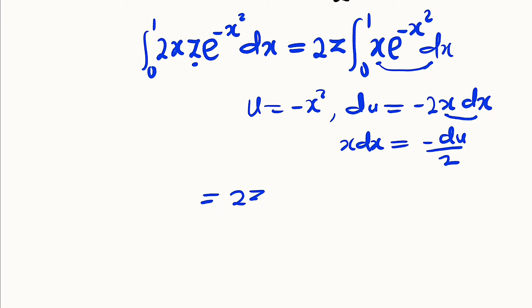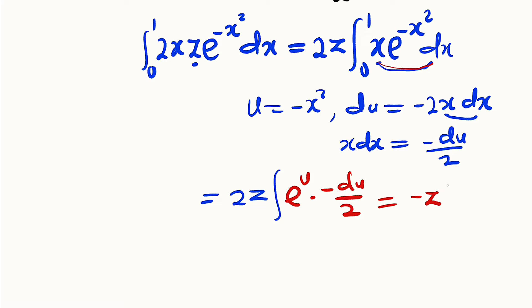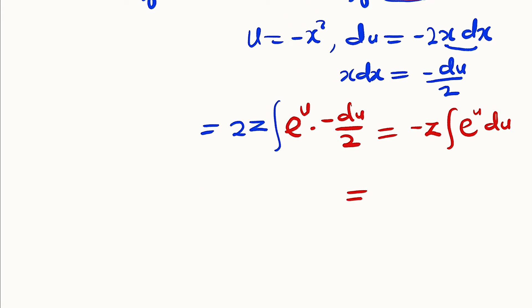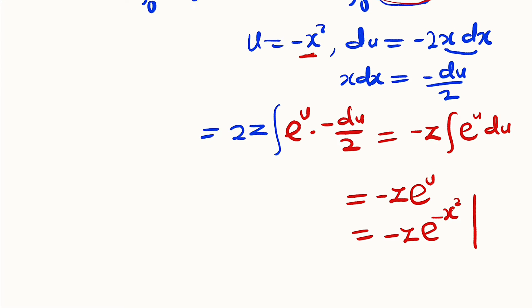Substituting back: we have 2z outside the integral. x dx becomes -du/2, and e^(-x²) becomes e^u. Factoring out -1/2, the 2 and 2 cancel, leaving -z times the integral of e^u du. Integrating gives -z·e^u, and since u = -x², this is -z·e^(-x²), evaluated from 0 to 1.